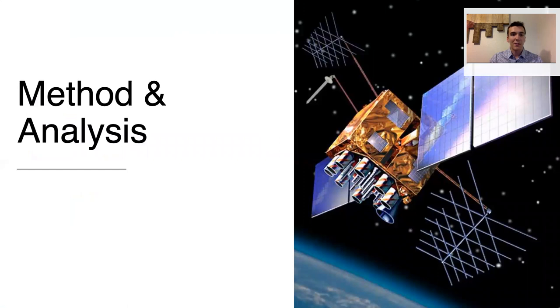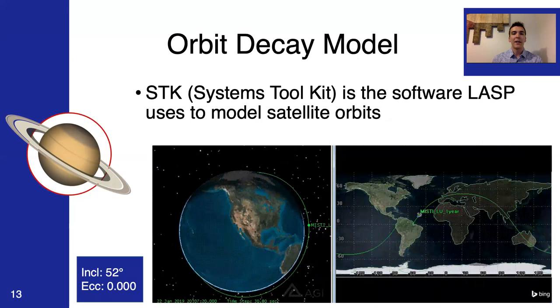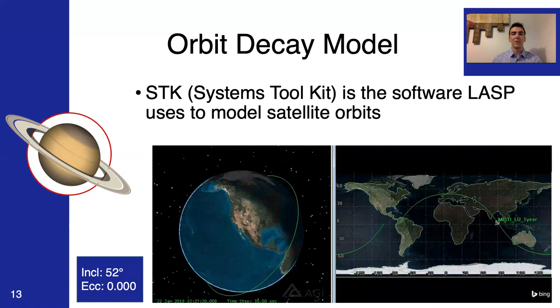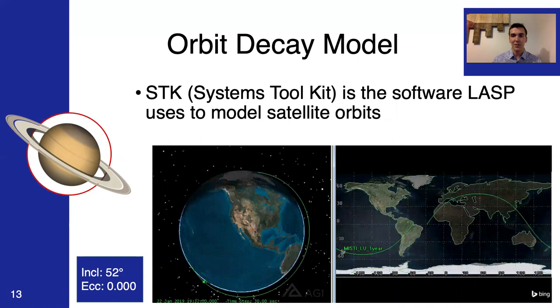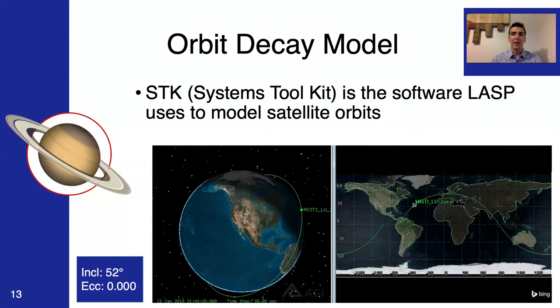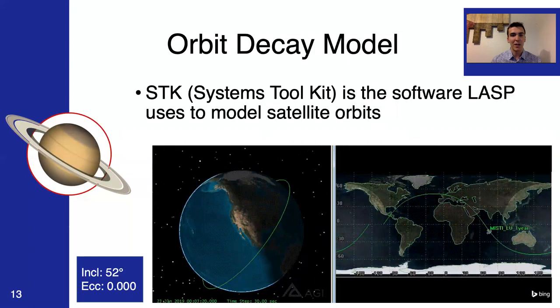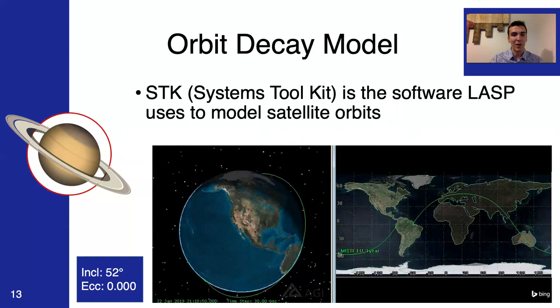Now I'm going to go over the methods and analysis used to develop the frame of thinking and the algorithm that I've come up with. Ultimately, I needed to use a third-party software to model some of the orbital decay. STK or Systems Toolkit is the software that LASP uses to model satellite orbits. Here you can see a graphic of just a single one of the satellites in our string of pearls. And using this model, I can predict what will happen to the spacecraft as I continue further in time. So, we can use this to model drag over time and see what happens to the spacecraft.